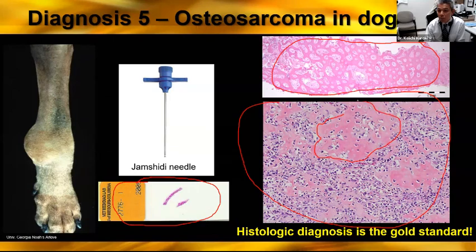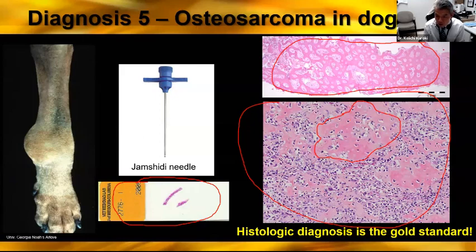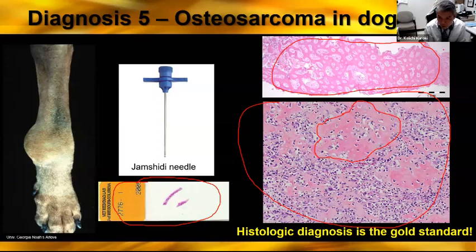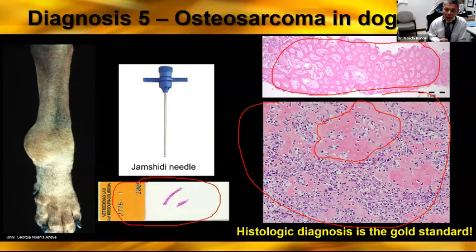We have those kinds of immature bone tissue — those are osteoid produced by neoplastic cells. So this is a histology image of osteosarcoma. Many veterinary clinicians rely on histologic diagnosis to decide their treatment options.